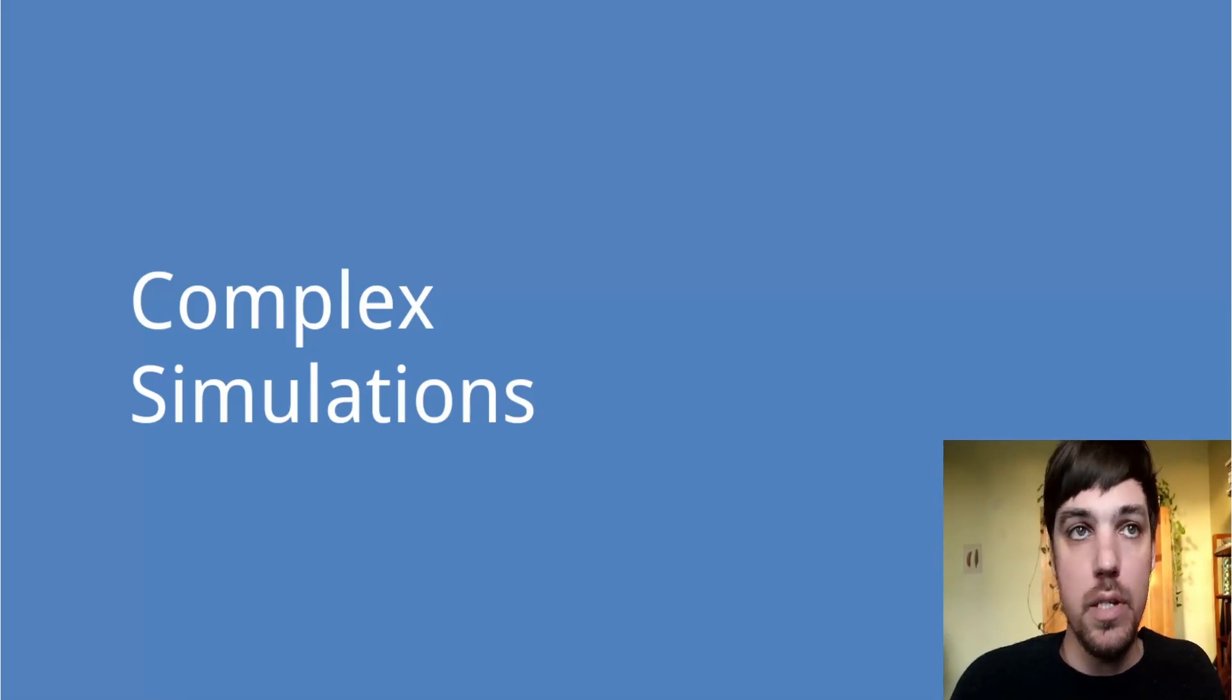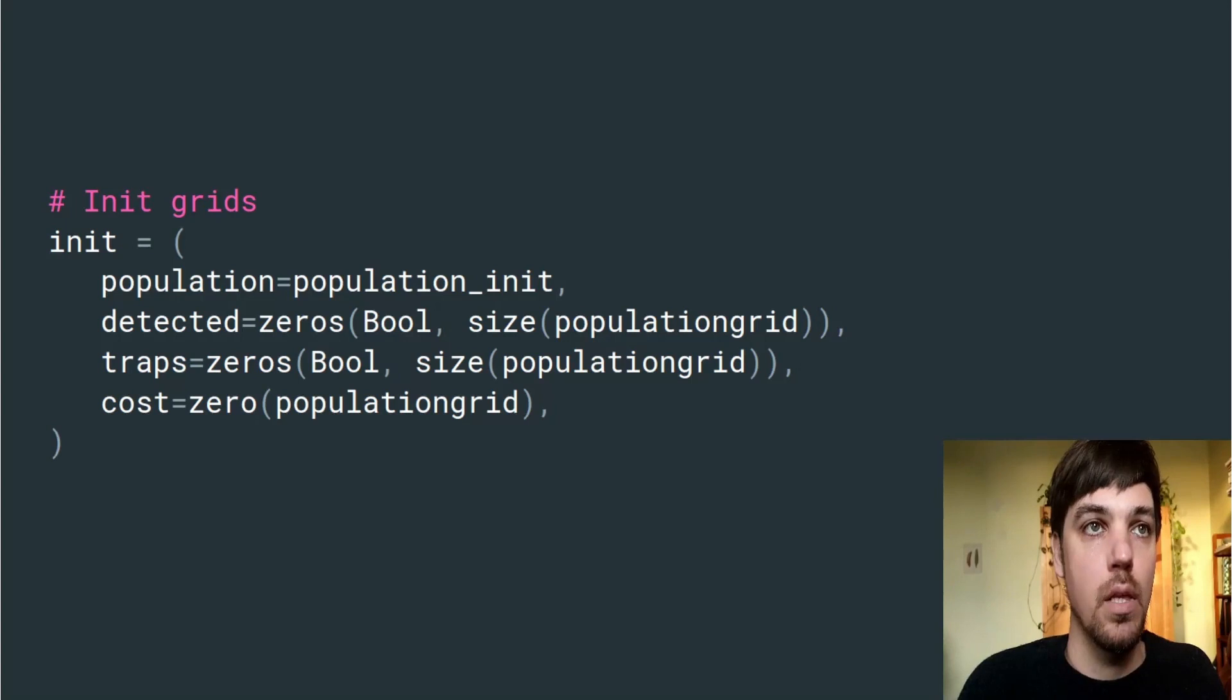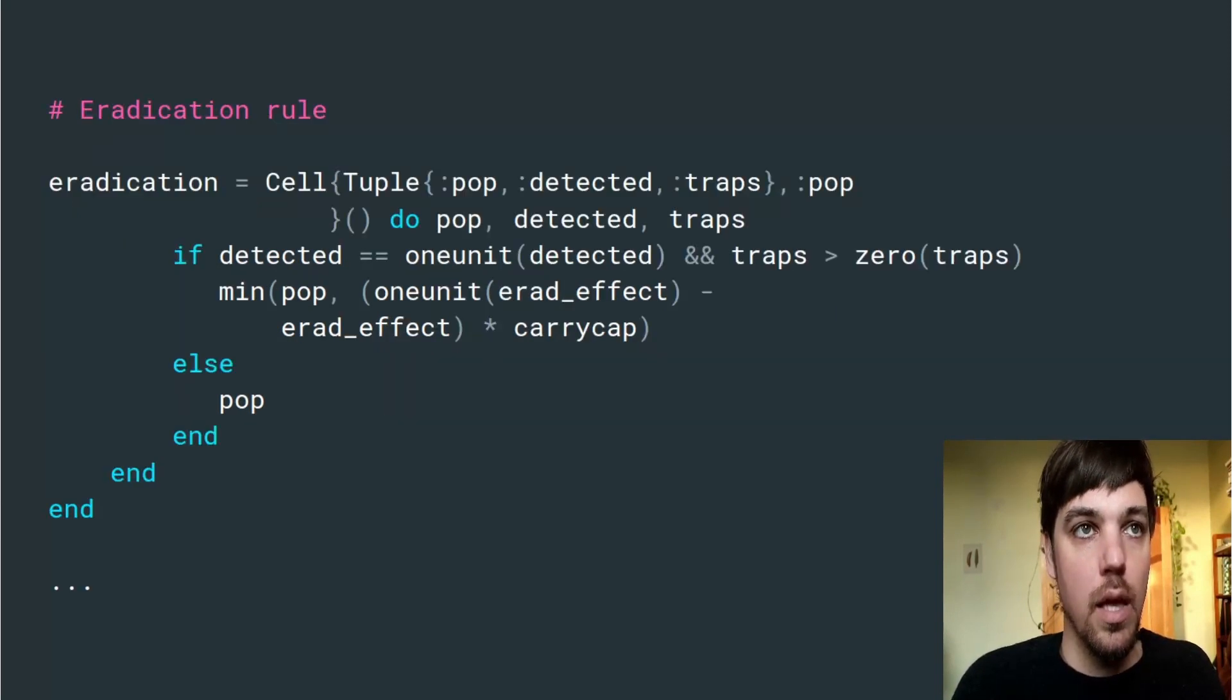Now we've looked at optimizations, I'll finish with some complex simulations. These are real simulations that we've done at CSER. We can define a large simulation with multiple grids, four grids here. Define some rules. Here we're using three of those grids as inputs and writing out to one. We have about 15 rules like this in the whole rule set.